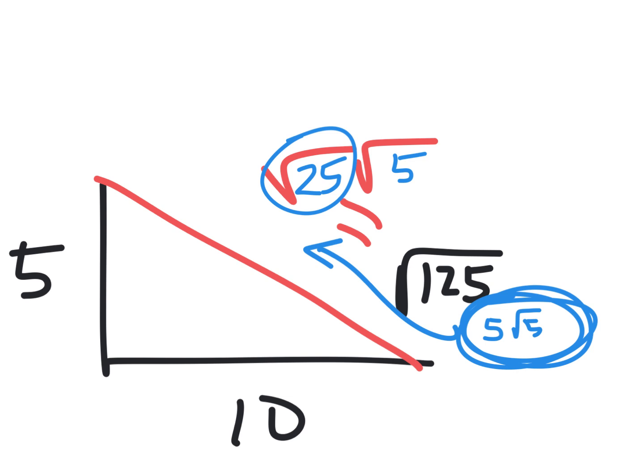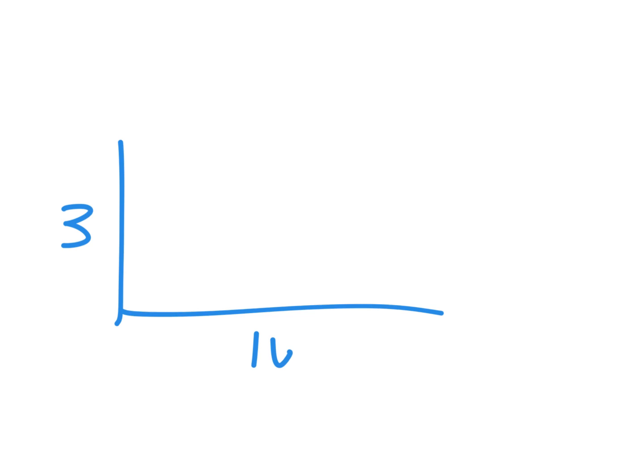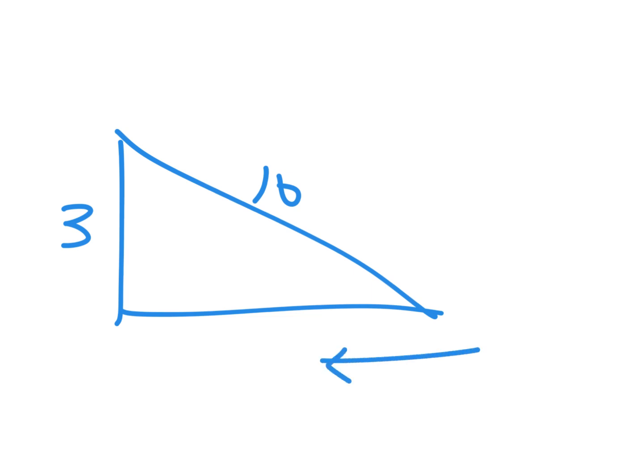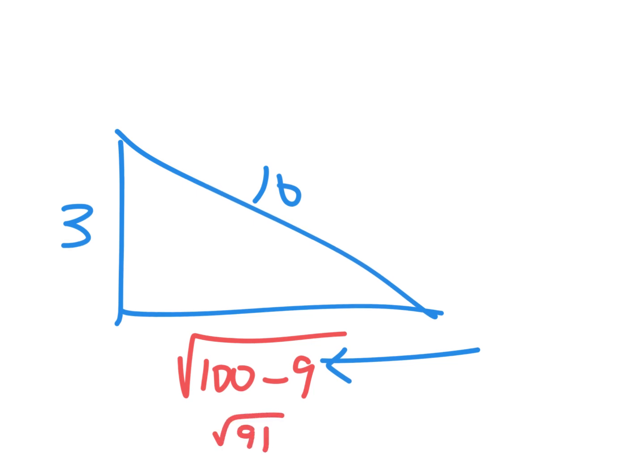Do you always add? No. If you're finding the non-longest side, you subtract. Let's say this is 3 and this is 10 — what's the other side? Square root: 10 squared is 100, 3 squared is 9. Why minus, not plus? It's not the longest side. And that's the square root of 91. I don't think anything goes into 91, so I could just leave it that way.